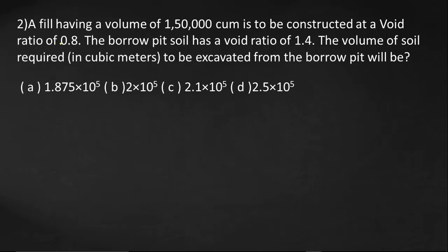Next question: A fill having a volume of 1,50,000 m³ is to be constructed at a void ratio of 0.8. The Borrow Pit soil has a void ratio E_b = 1.4. Find the volume of soil required to be excavated, V_B.